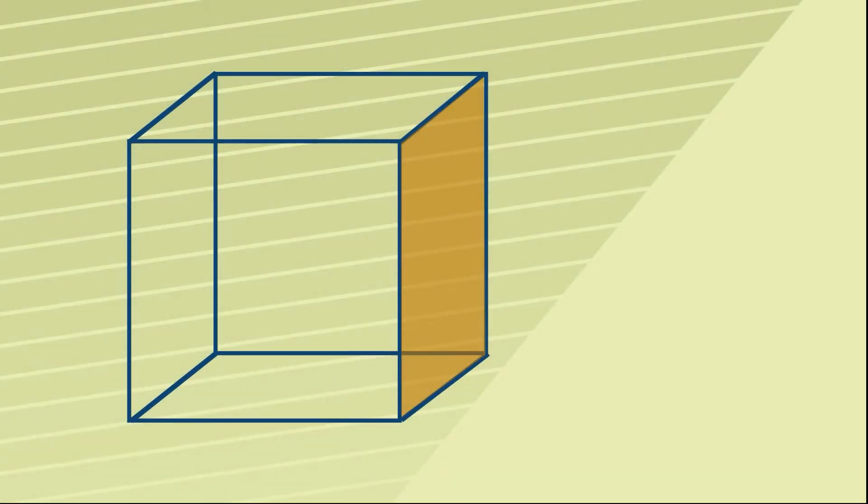We start by imagining a perfect cube where all the sides are of length L, and you can see that the right hand face has been colored in.